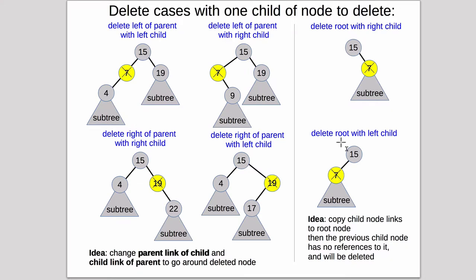How we do this is we copy the child node's links to the root node. So all the links that are in the child node are copied up to the root node except for the parent pointer. Basically this root's data is wiped out but the node itself isn't wiped out. The binary tree class will still point to the root that it used to point to, but it will now have a different key and value and so on.